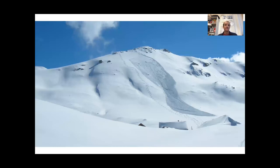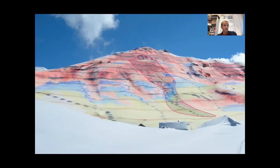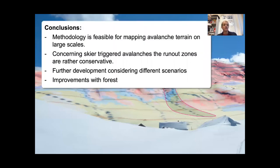The presented maps provide insight into typical avalanche terrain, focusing on important issues such as avalanche release areas, potential for remote triggering, run-out, and the potential of consequences. The methodology is feasible for mapping avalanche terrain on large scales. Concerning the run-out zones, our simulations were rather conservative, and further development is needed, possibly considering other scenarios.